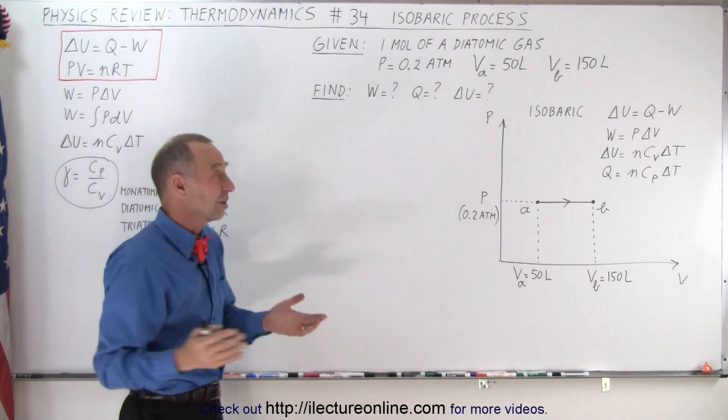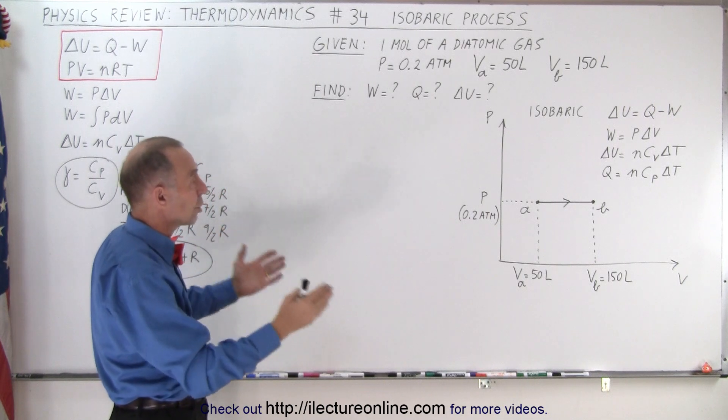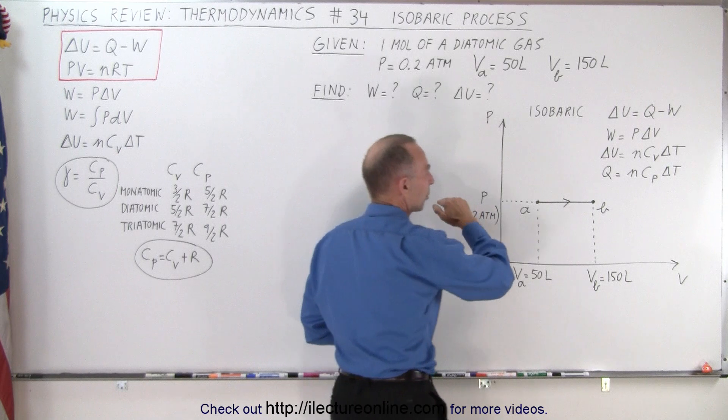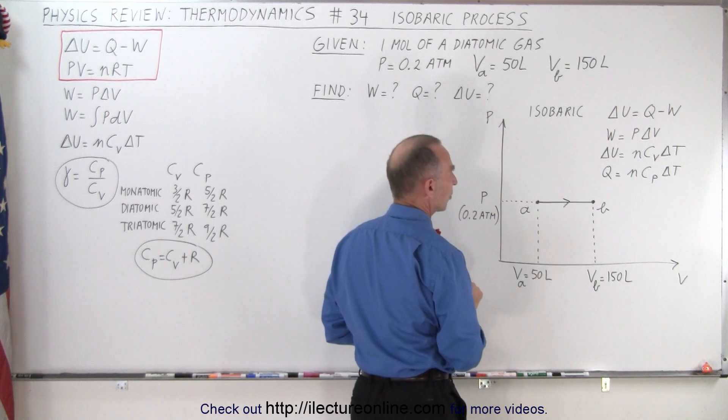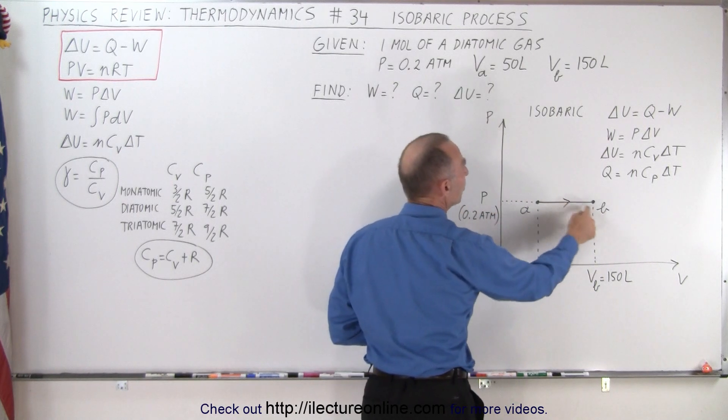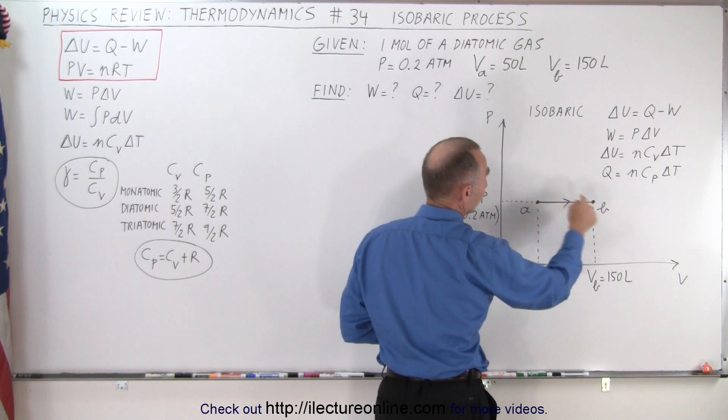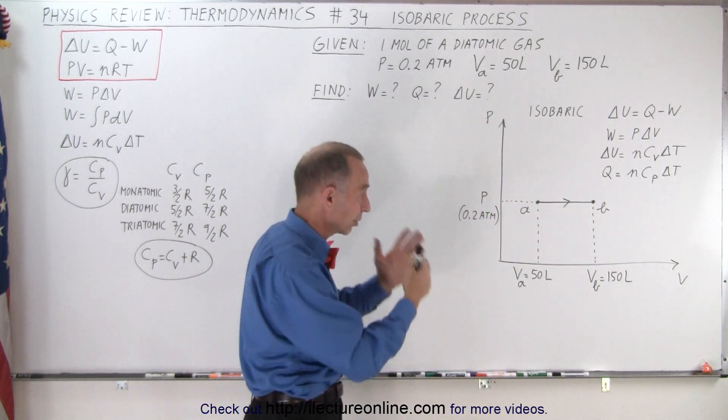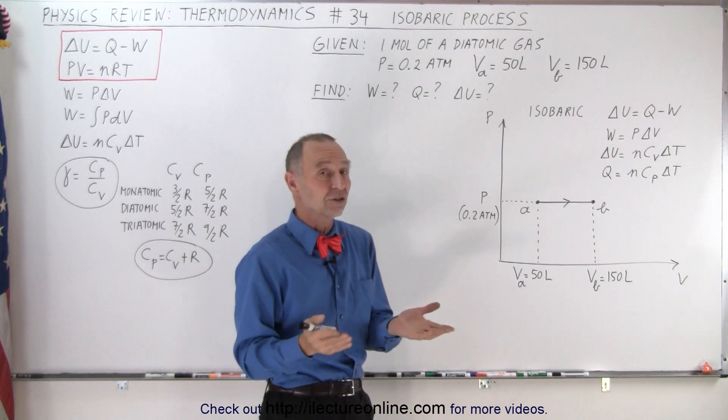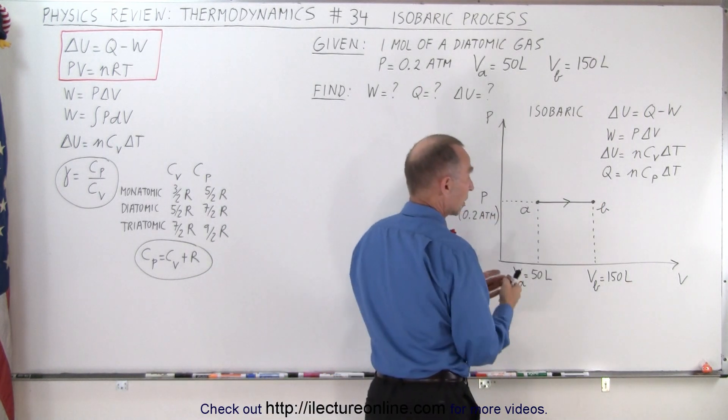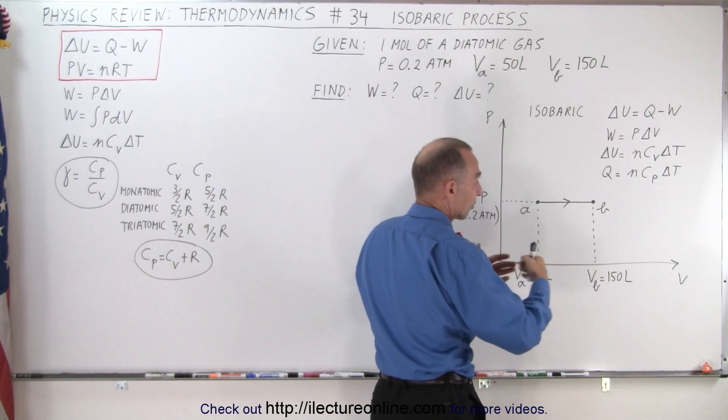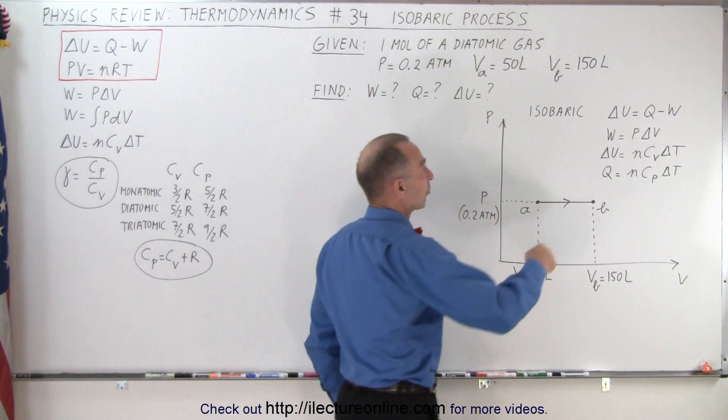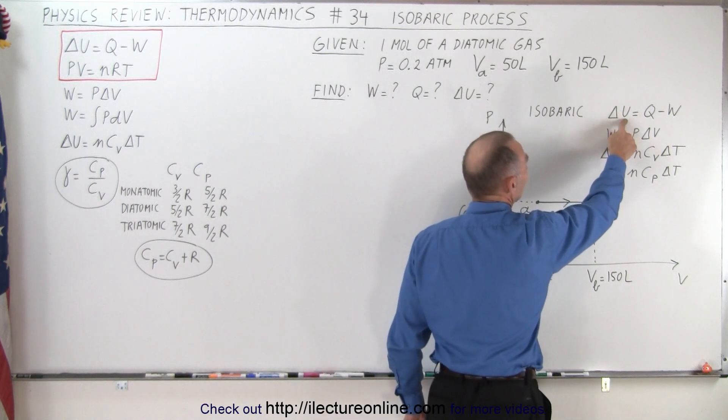Regardless of what the problem asks, we know it's always going to look something like this. The pressure is constant, it's isobaric. We go from A to B, or from left to right or right to left, depending on if the volume increases or decreases. The only thing that changes is the sign. If it goes to the right, the work done is positive because the gas does work. We have the first law of thermodynamics, that never changes.